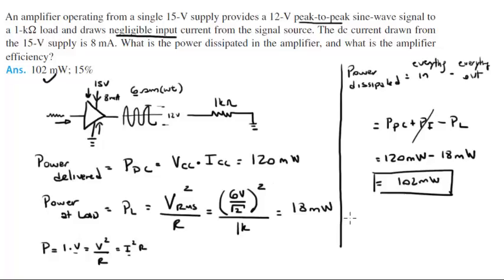And to find the efficiency, all you got to do is PL divided by the power delivered. Sorry about that, that's PDC. So PL is 18, PDC is 120, times 100. So the efficiency comes out to be 15%.